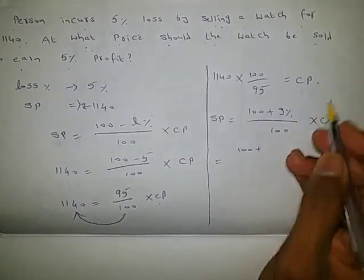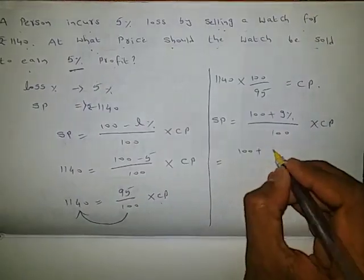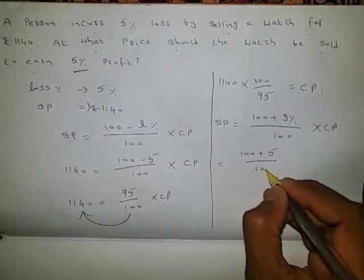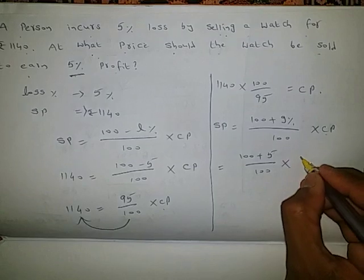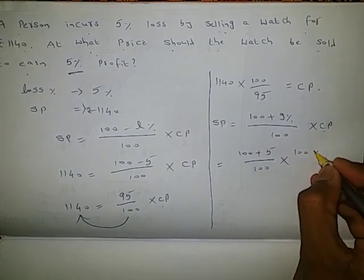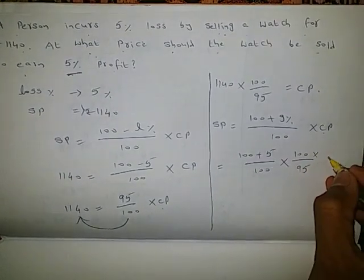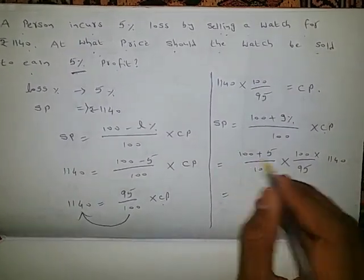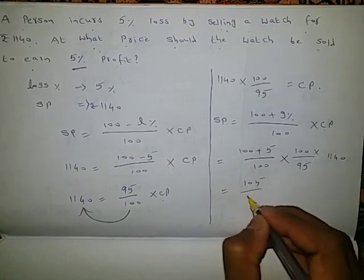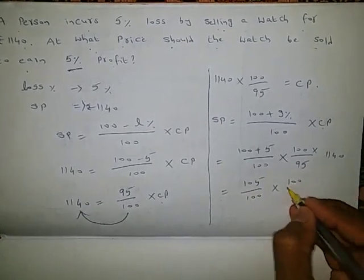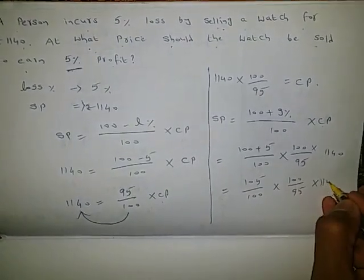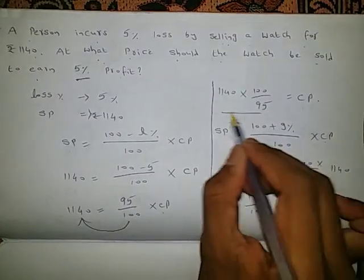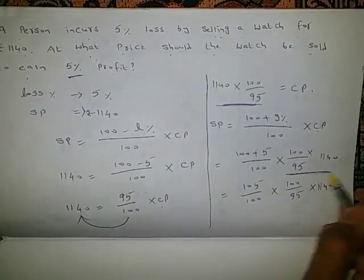100 plus gain percentage, given as 5%, by 100, into cost price, which is 100 by 95 into 1140. We will get 100 plus 5, which is 105, by 100, into 100 by 95, into 1140. Here, whatever we got for cost price, I'm substituting here as it is.